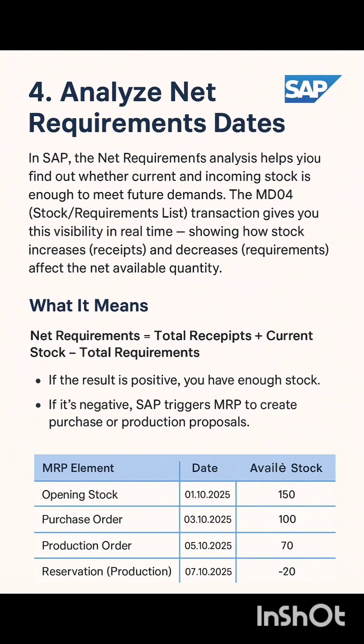MD04 also helps you analyze net requirements in SAP. Net requirements analysis shows whether your current and incoming stock is enough to meet future demands. In MD04 you can view all incoming receipts and outgoing requirements to see your net available stock in real time. For example, if you have 100 units in stock, a purchase order of 50, and total requirements of 170, your net requirement becomes minus 20 — meaning you will face a shortage. SAP automatically uses this to trigger MRP proposals for new purchase or production orders.